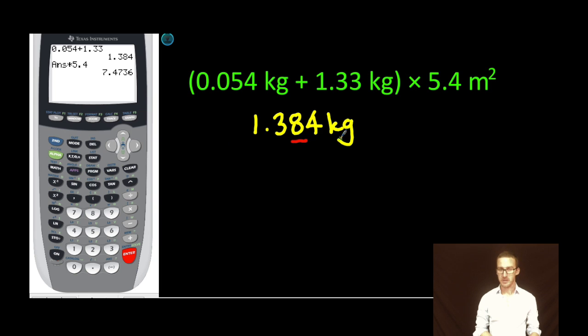This measurement, as it's written out, has four significant figures. But remember, it really should only have three. So as I compare three total sig figs to two sig figs, my final answer should have just two sig figs, in this case, 7.5 kilograms times meters squared.